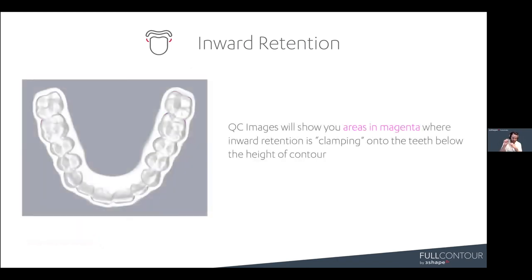In the QC image, you're looking into the intaglio surface of the Nightguard, shown before you download and pay. You'll see magenta areas indicating where the Nightguard is engaging into the undercut. A lot of magenta means very retentive. If you're printing with Keysplint Hard, be aware that too much retention with a hard material can make it very difficult to insert and remove — it depends on your materials and printer settings.